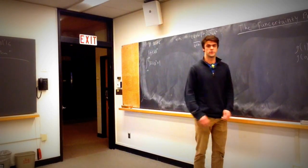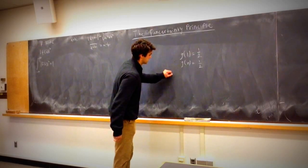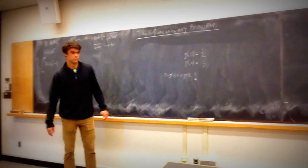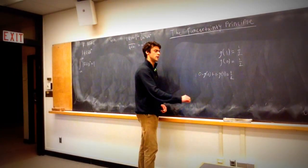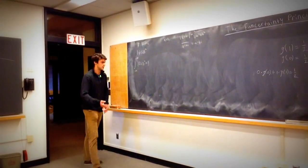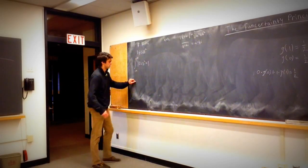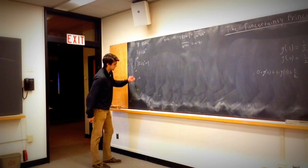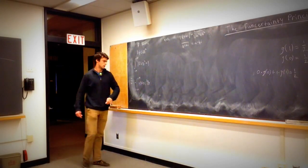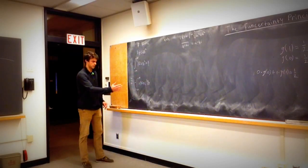If we were going to define the expectation of this coin toss, we'd do something like zero times G(0) plus one times G(1), which equals one half. What we're doing is taking all possible outcomes and multiplying the outcome times the probability the outcome happens. Analogously, if we define the expectation of a random variable having this probability density function, we define it as the integral of x times |f(x)|² dx over all possible values.